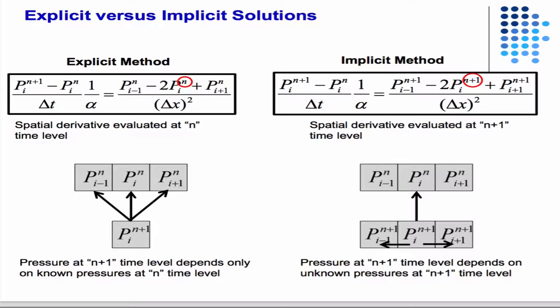On the left-hand side, we have the same equation in both instances. On the right-hand side, we make the decision to evaluate the spatial derivative at time step N—that gives us an explicit method. If we evaluate the time step at N plus 1, we get an implicit method.